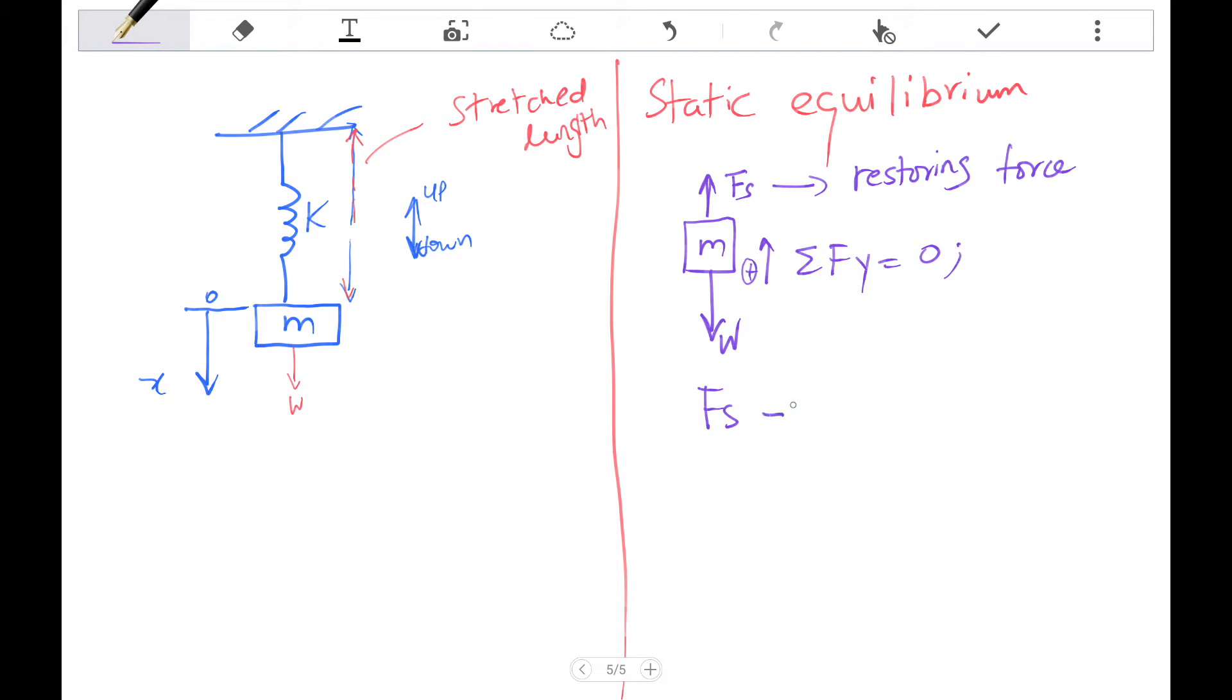Let's do sum of forces in the y direction, and we'll consider up being positive equal to zero. We've got Fs minus the weight equals zero, so Fs is equal to the weight which is equal to k displacement. So the force of gravity pulls down. You have to know that this is at rest, there's no motion, it's just called static equilibrium. So now we know that the weight is equal to k displacement and that's what we want.